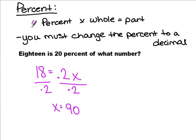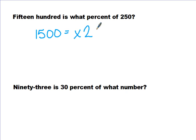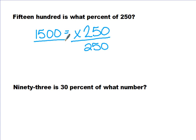Make sure we are following the equation: percent times the whole equals part. Let's look at a second example. Fifteen hundred is what percent of 250? Let's take this step by step. '1500 is' means equals, 'what percent' — so we're looking for our percent — 'of' means multiply 250. In order to solve for x, we need to divide both sides by 250, and 250 goes into 1500 six times.